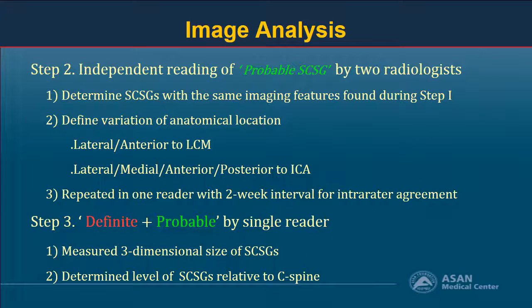Step 2: The two radiologists independently reported MR signal intensity and their relative location to the ICA and the longus capitis muscle. One of the readers performed the same analysis with a two-week interval to investigate intra-observer agreement. Step 3: For all localized neck sites, one reader measured the three-dimensional size and determined the level of the ganglia relative to the cervical spine.